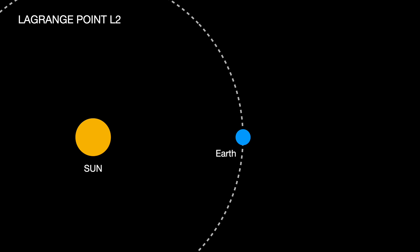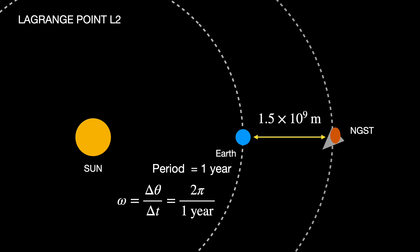So here's the Sun with the Earth orbiting. The Earth takes a time of one year to make one complete orbit. And you could think of this in terms of the angular velocity as 2π radians in one year. The next-generation space telescope is going to be further away, a distance of 1.5 times 10 to the ninth meters. But we want it to also have a period of one year. That's not so easy to do, and I will tell you why.